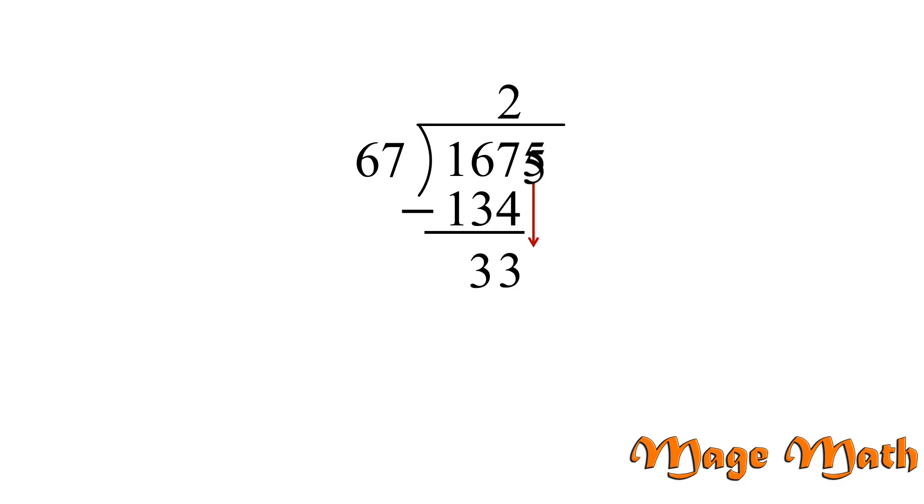Now, we want to bring down 5, the next digit, and we're going to ask ourselves, how many times does 67 go into 335 without going over? This is where we'll do some more scratch work off to the side. We know 67 times 2 is 134. So we need to find another product that results close to, or exactly, 335. Let's try 67 times 5. Well, 5 times 7 is 35. We write the 5 below and carry the 3. And now multiply 5 times 6, which is 30, and add the 3. That gives us 33, so 67 times 5 is 335. And that's perfect.